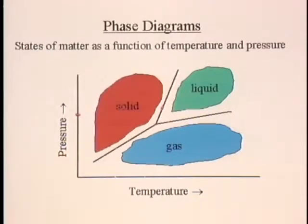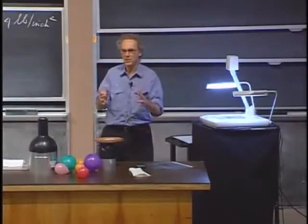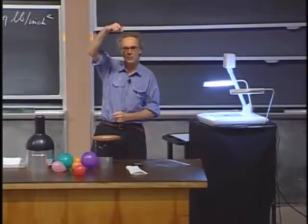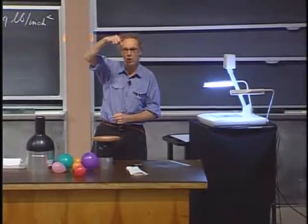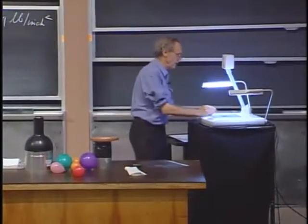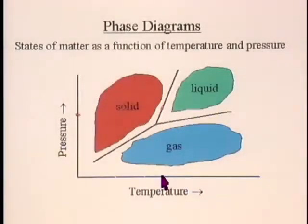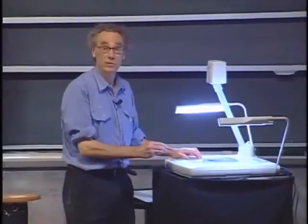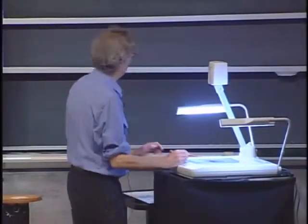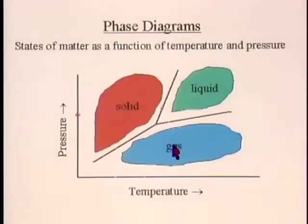Imagine that we have a cylinder, and we put gas in that cylinder, and we put a piston on top, and we push it down slowly. So we start with gas at a particular temperature, which we're not going to change, and we slowly push the piston down. In this trajectory, the ideal gas law would hold. Temperature remains constant, so PV remains constant — that's called Boyle's law, that the product of pressure and volume remains constant.